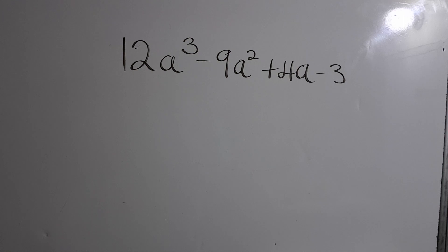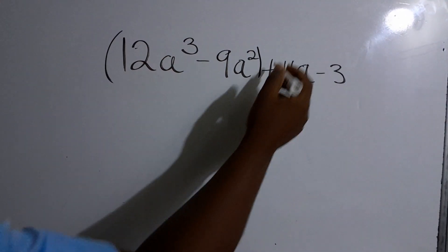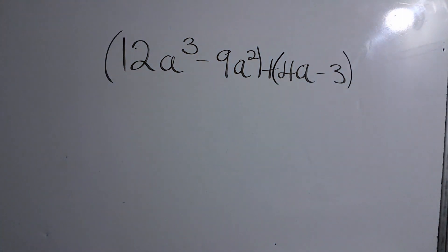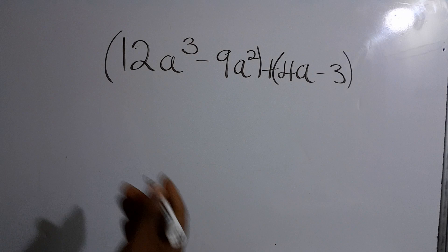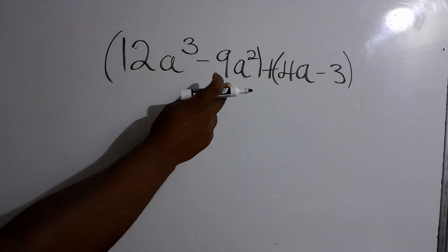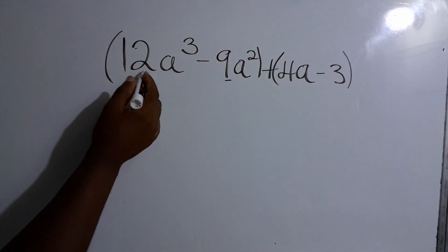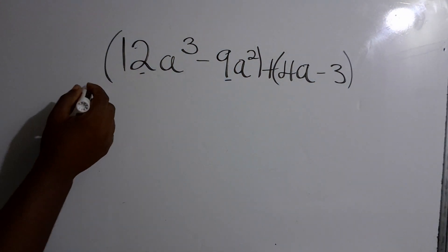When you are factorizing, what we take out is the highest common factor. Think about from primary school when you searched for the HCF. We need the highest number that can go into 12 and 9. The factors of 12 are 1, 2, 3, 4, 6, 12. The factors of 9 are 1, 3, and 9. So the highest number that can go into both 12 and 9 is 3.